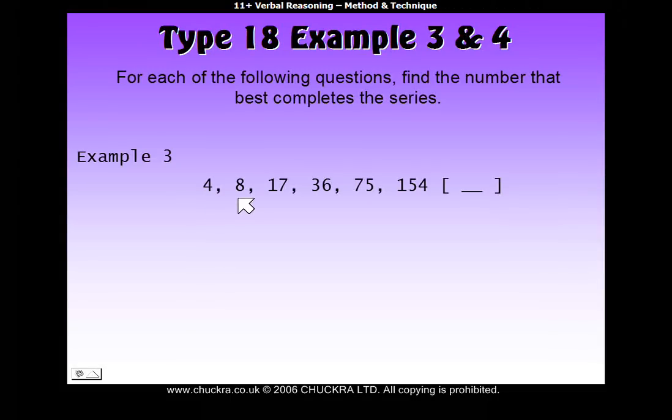Here's our series. So how do we get from 4 to 8? You could either say you're adding 4, or you're doubling it. So how do we get from 8 to 17? Well, adding 4 doesn't look too good because we only get to 12. Doubling it, we get to 16, which is quite near, but we'd have to add one more.